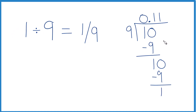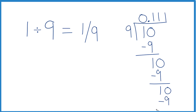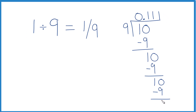We move over 1 again, call it 10, and 1 times 9 is 9, subtract, and we get 1 again. This just keeps going. So we could say this also equals the decimal 0.1, and we put a bar here to show that the 1 just keeps repeating. You'll just keep getting 1, and it'll just keep going.